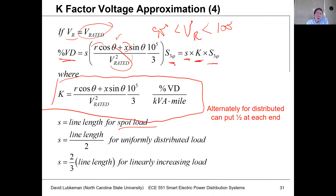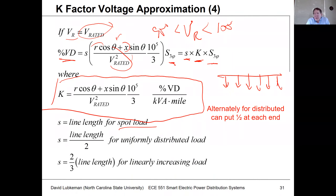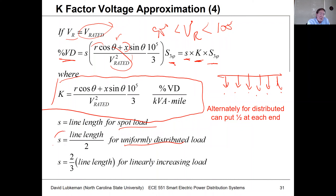There are many cases where we don't have all the load right at the end of the line — it's actually broken down along the entire line length. A lot of times we make what's called a uniformly distributed load assumption, where the load is broken into smaller loads distributed up and down the length of the line. In that case, we won't get as much voltage drop because the load is spread out instead of all being at the end of the feeder. For a uniformly distributed load, the equivalent value of S is the line length divided by two.